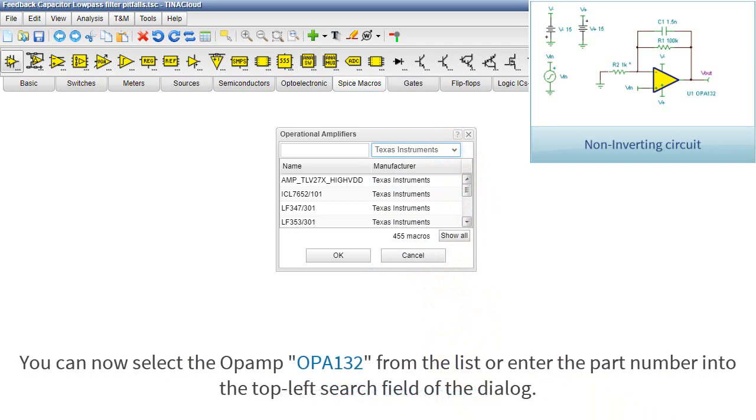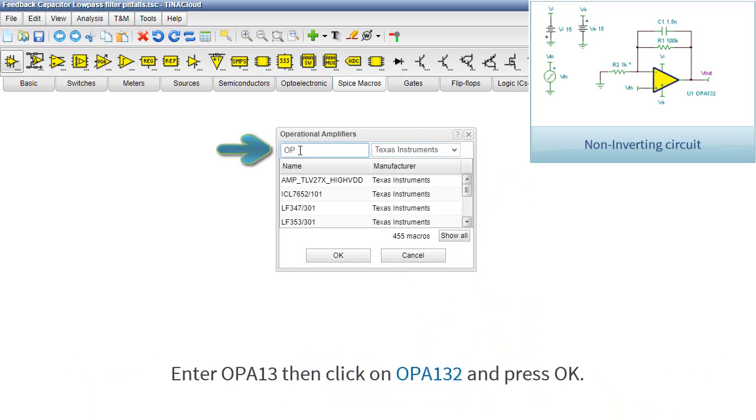You can now select the Op Amp OPA132 from the list or enter the part number into the top-left search field of the dialog. Enter OPA13, then click on OPA132 and press OK.